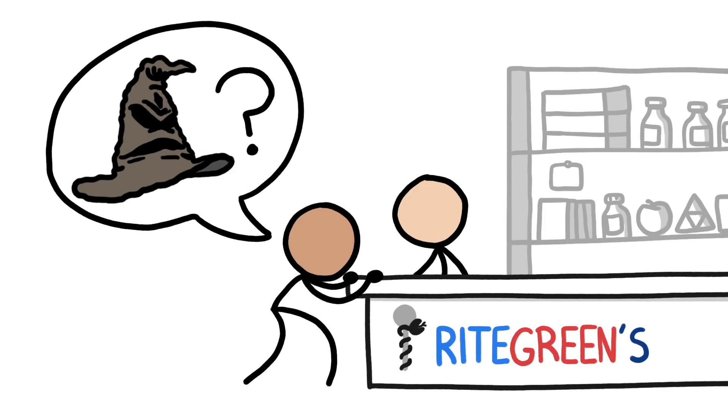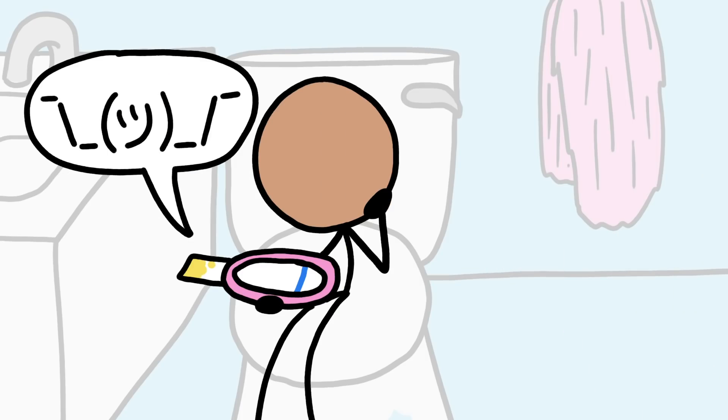Luckily, that test already exists at your local drugstore. It's called an early pregnancy test. Okay, you can't just pee on a stick and have it tell you if you've got the plague. Yet.